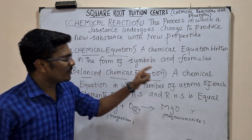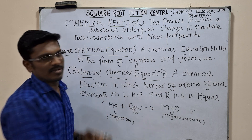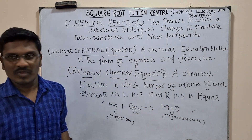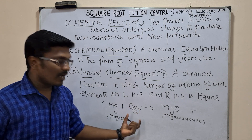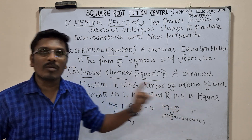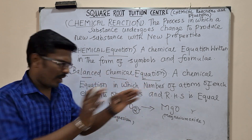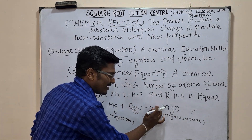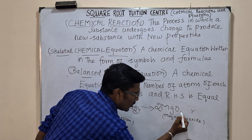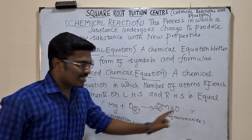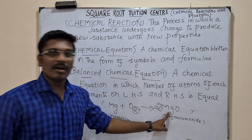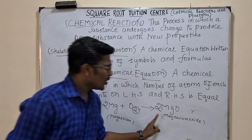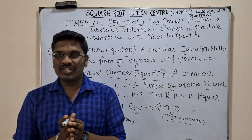Now we go to the balanced chemical equation. The number of atoms of each element on the LHS must be equal to the RHS. So we have to balance the equation. Two ones are 2, so oxygen is balanced. Now we balance the magnesium side — we put 2 magnesium on the left and 2 on the right. So 2Mg + O₂ → 2MgO: 2 magnesium, 2 oxygen. We get the product magnesium oxide.